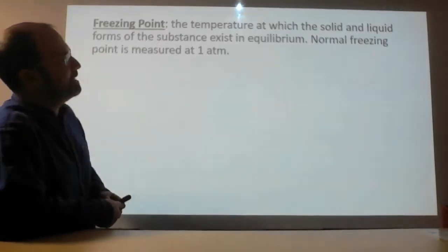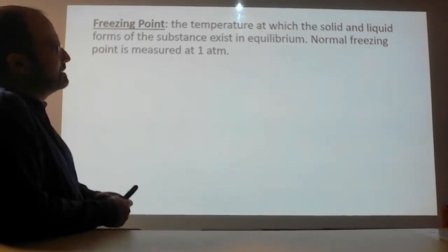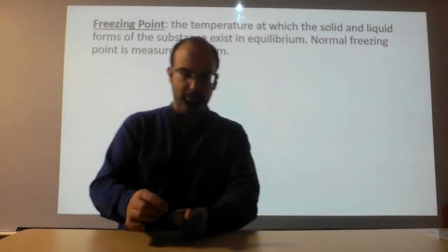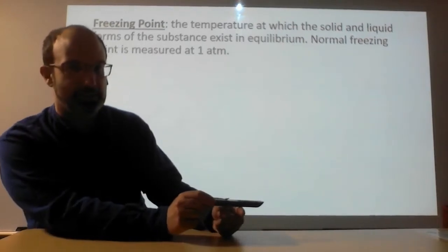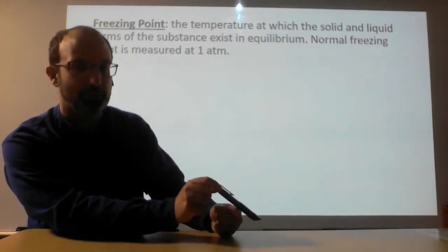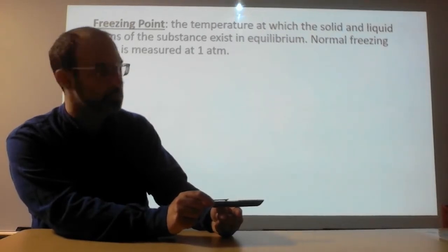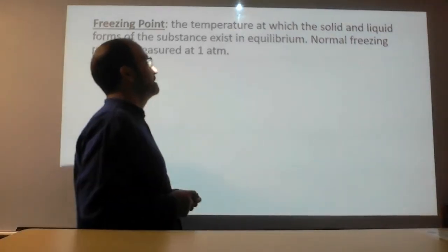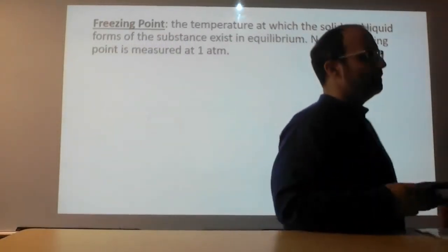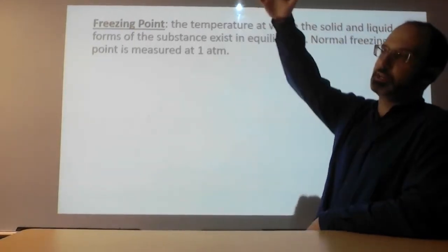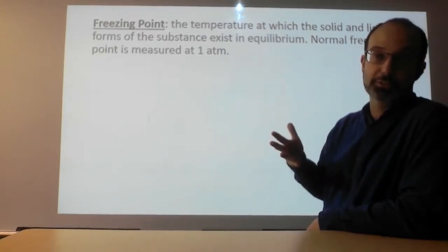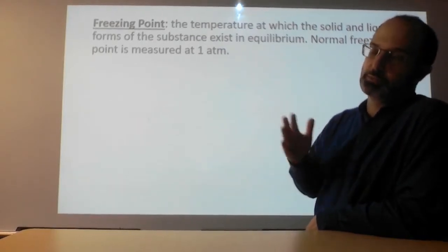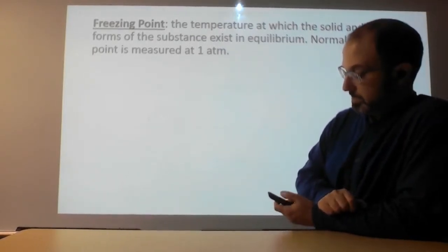The freezing point is the temperature at which the solid and liquid forms of the substance exist in equilibrium — equilibrium means balance, like a perfectly balanced seesaw. So the freezing point is when the solid and the liquid exist in balance. Normally we measure this at one atmosphere — that's just the pressure of Earth's atmosphere on top of things. We could make more or less pressure, but we generally measure things on Earth since most of us will be on Earth for our entire lives.